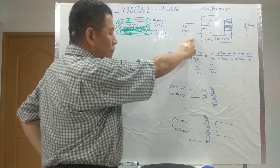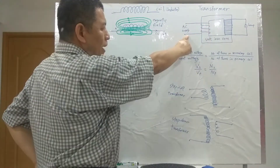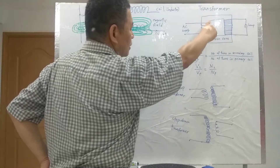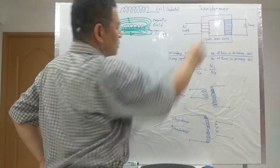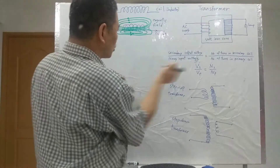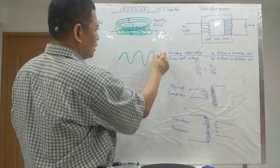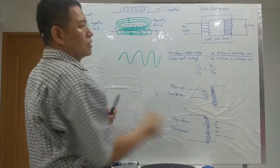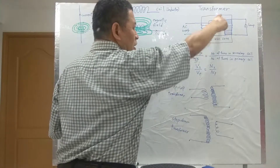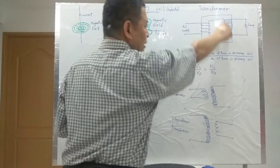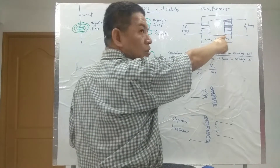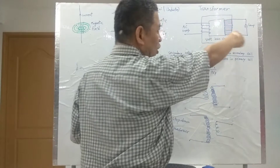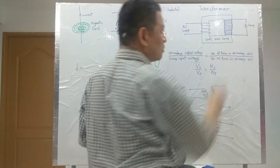When there is an AC current passing through the coil, the primary input will generate a magnetic field here at this portion. The AC current is a changing current, so the magnetic field will also be a changing magnetic field. When there is a changing magnetic field here, it will also cut the secondary coil. Once the magnetic field is cutting the secondary coil, the secondary coil will also generate a current, and this lamp will light up.